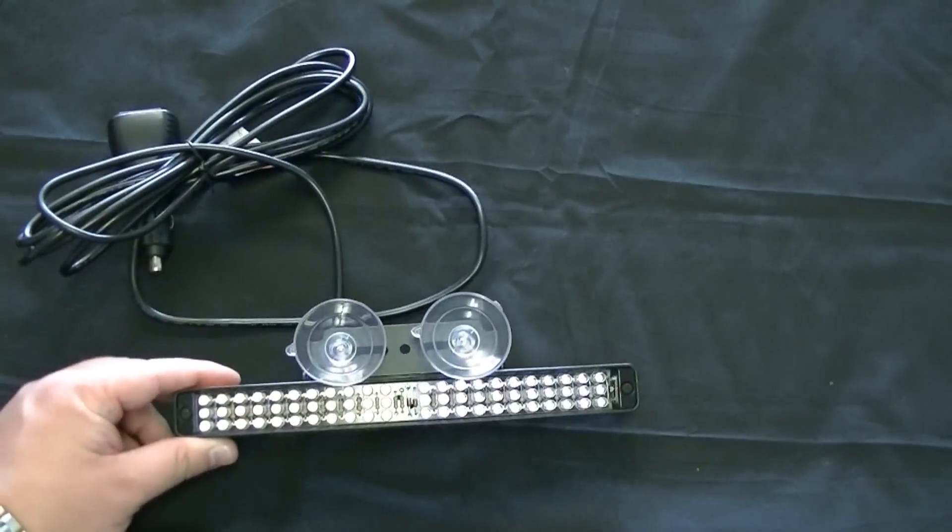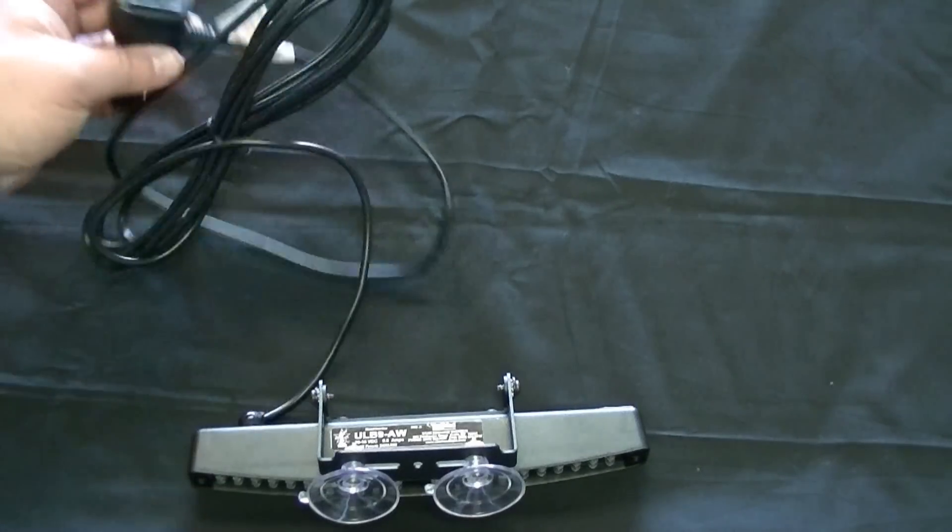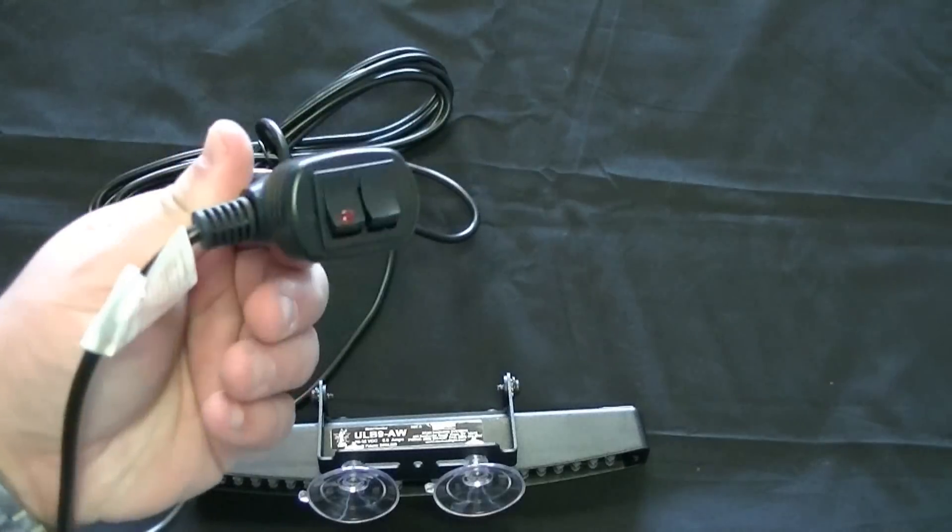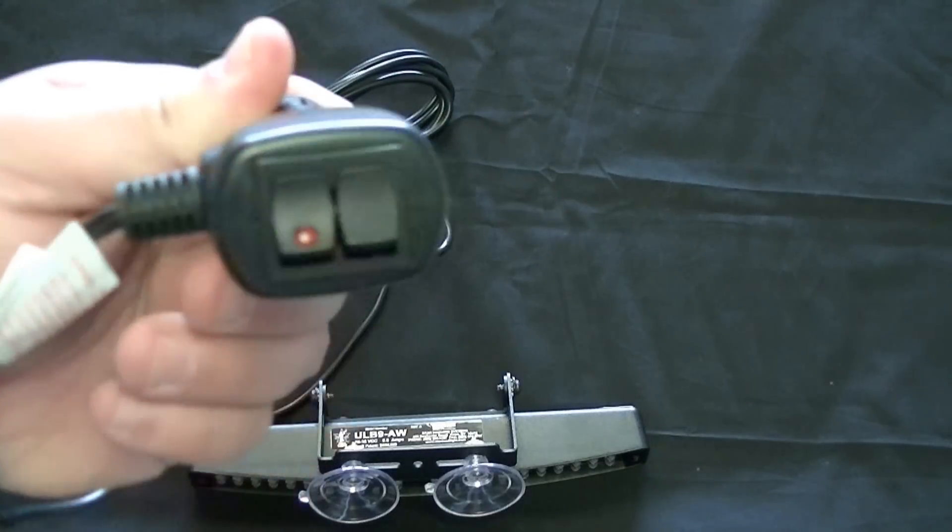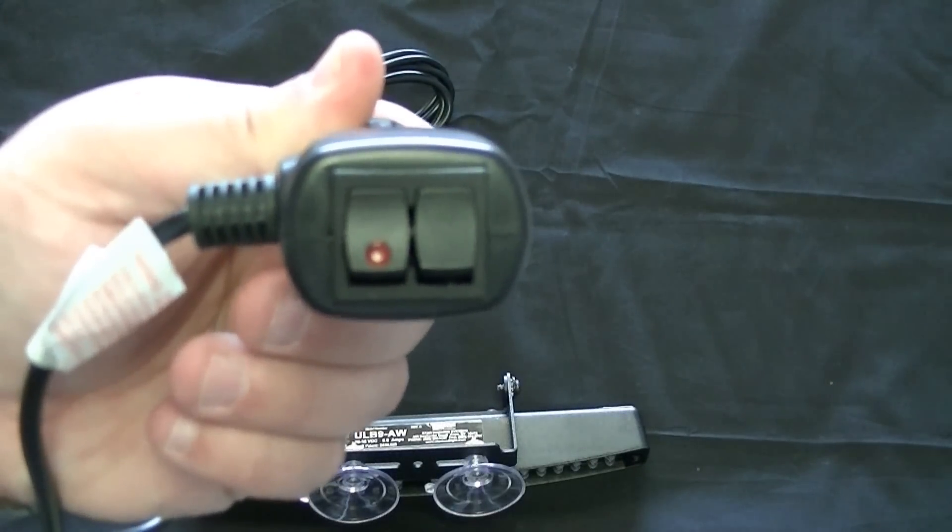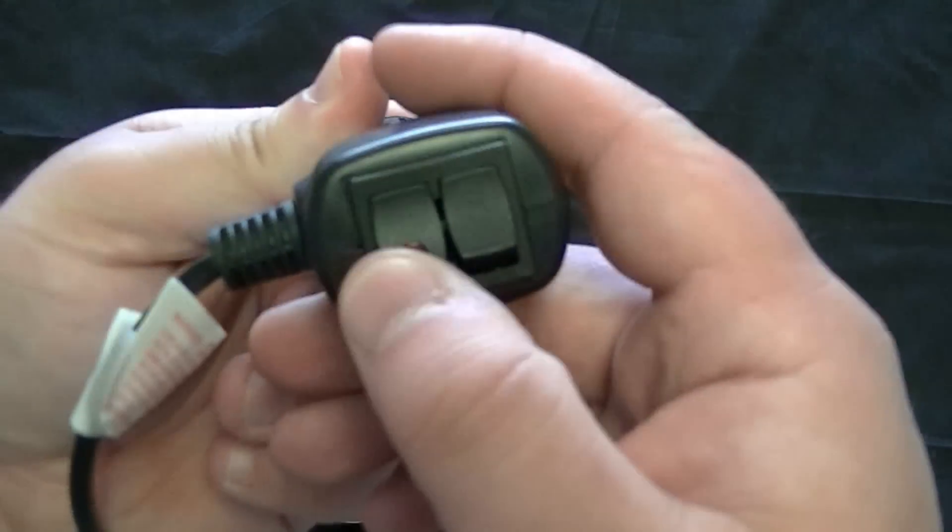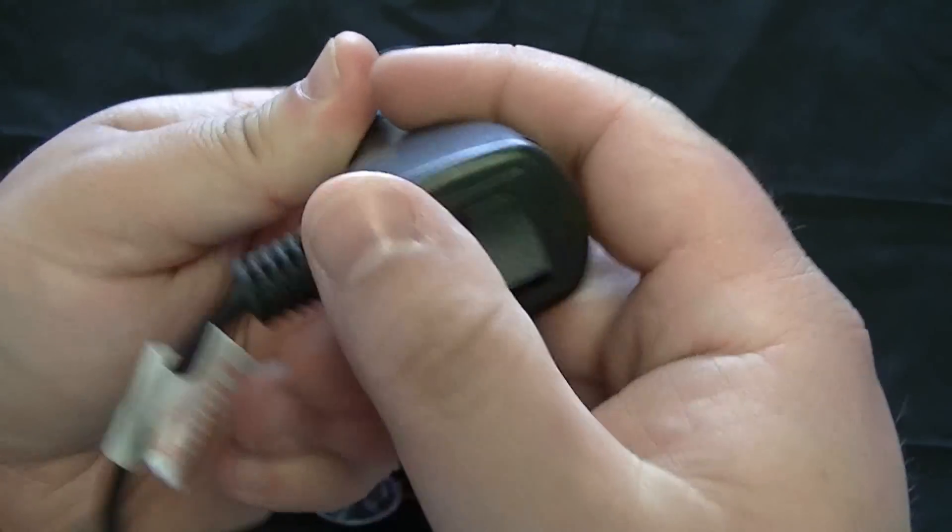Obviously, you can cut the cigarette lighter plug off of the unit and wire it to a switch. Most dash lights nowadays have a switch similar to this on-off and a pattern changer.